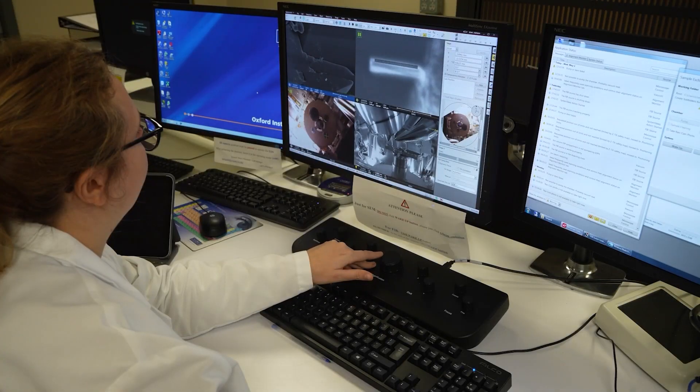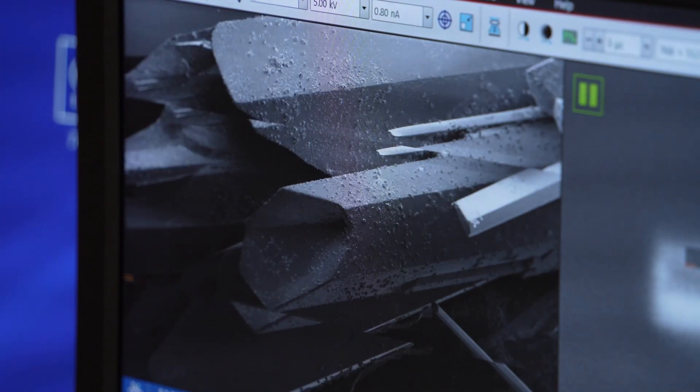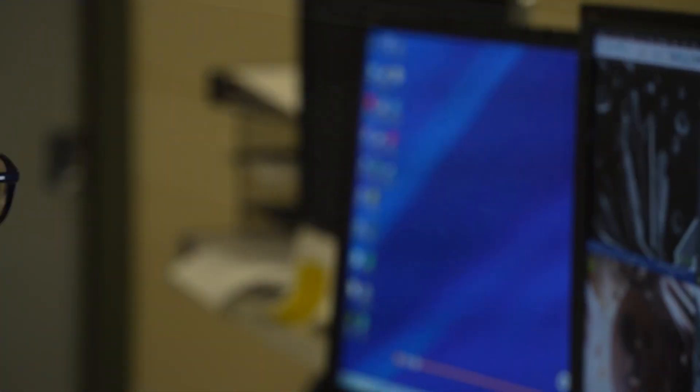The Mag Lab's high-resolution scanning electron microscope has the power to see down to the nanometer. That's a billionth of a meter, 100,000 times thinner than a human hair.